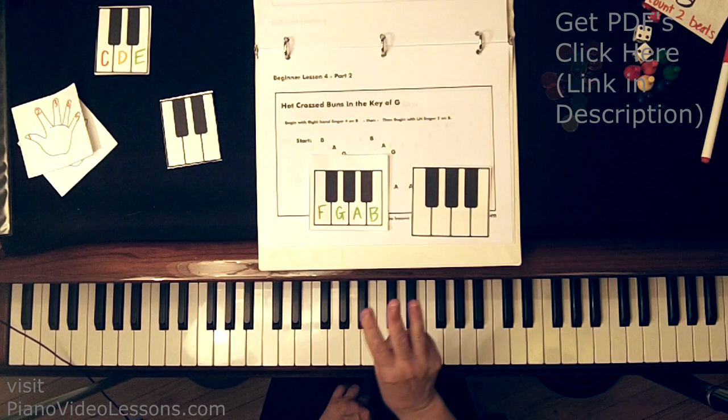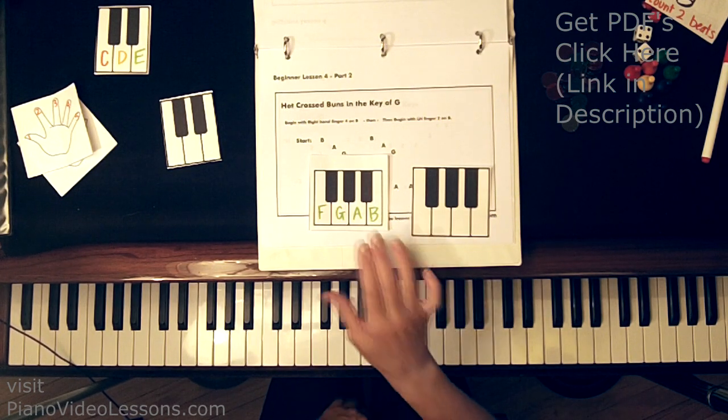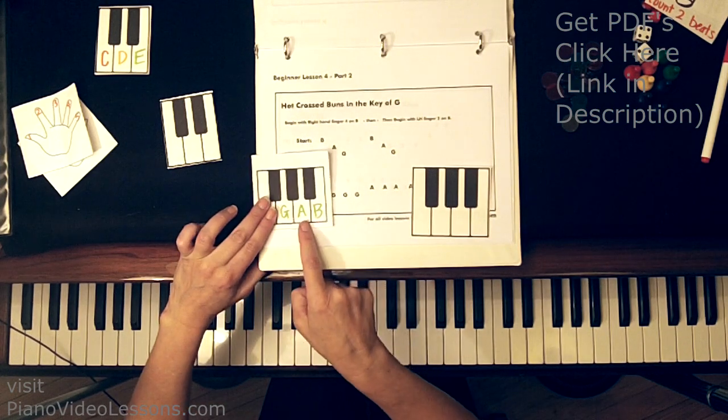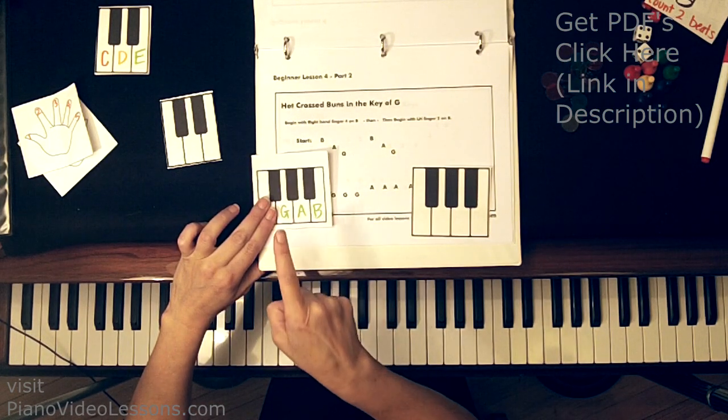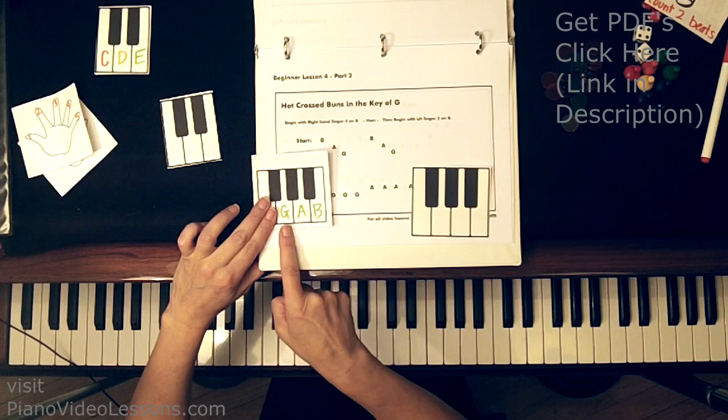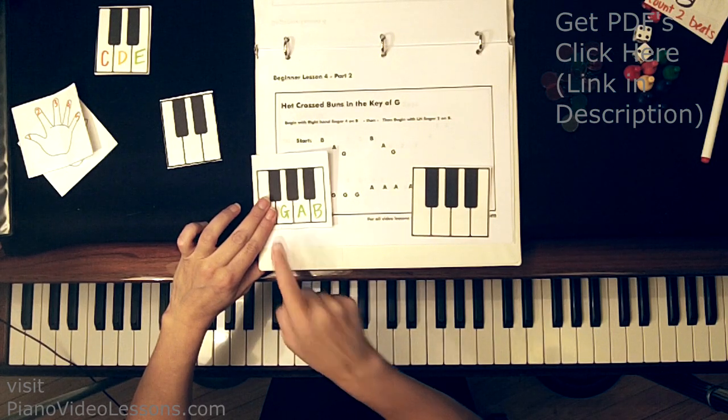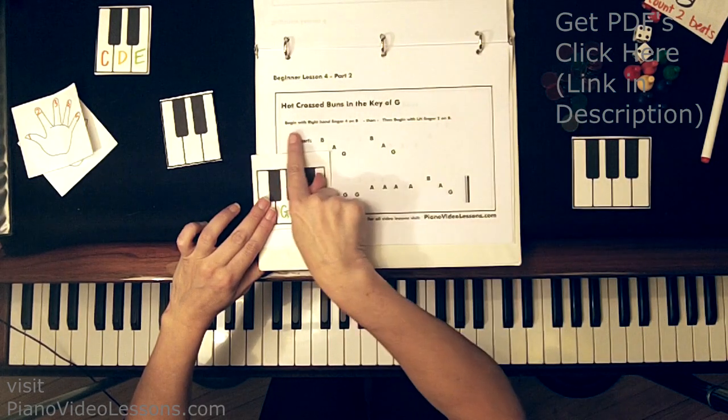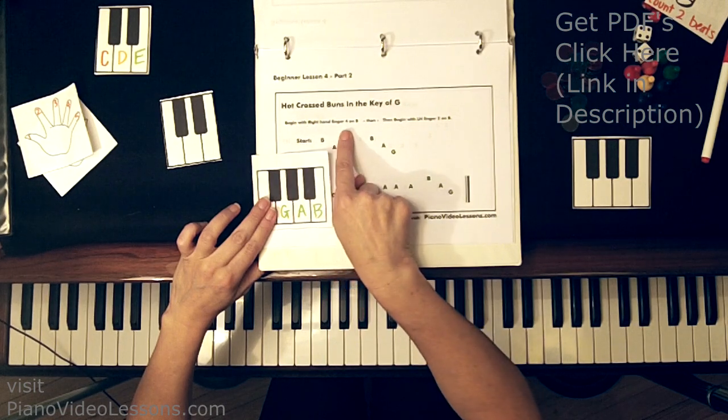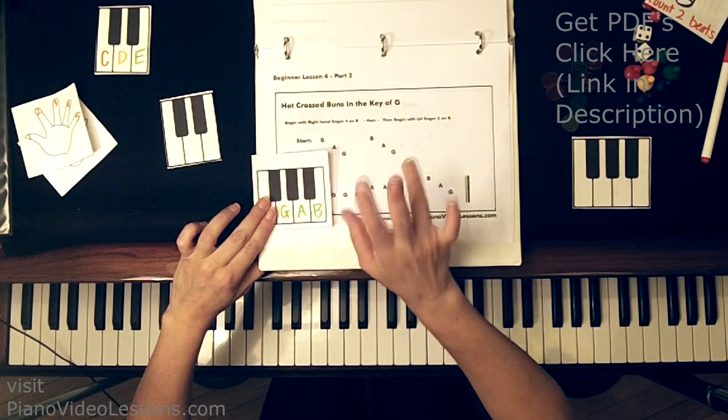So we only need three of those notes to play hot cross buns. We only need B, A, and G. And G is our tonic or our home note in the key of G. So let's find out what it says here.